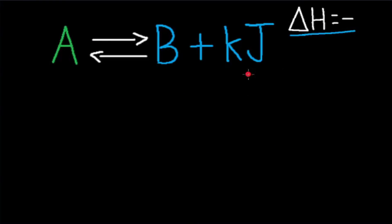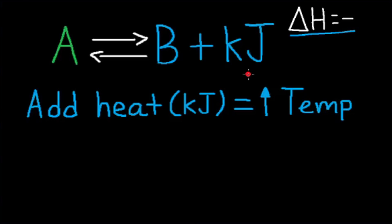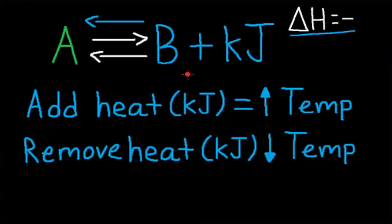For exothermic reactions, heat can be treated as a product. So if we add heat or increase temperature, the reaction will shift left — don't point at what is being added. If we remove heat or decrease temperature, the reaction will shift right — point at what is being removed.